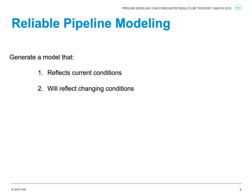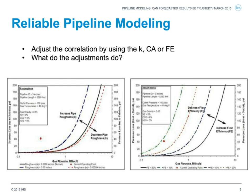When developing a pipeline model, there are really two objectives. First, we need to create something that actually reflects true operating conditions. This is relatively easy because you can make tweaks or changes to any operating parameters and get a match. But the challenging part is making sure that all those changes are still going to reflect your change in operating conditions. Some past modeling approaches didn't produce the best results, because modelers would adjust correlations using pipe roughness, correlation adjustments, or flow efficiency.